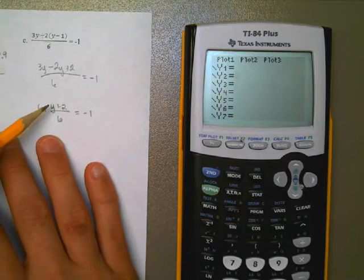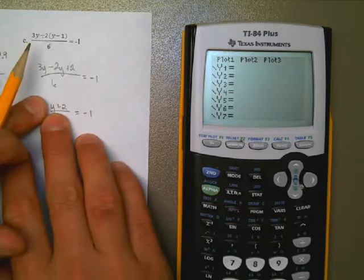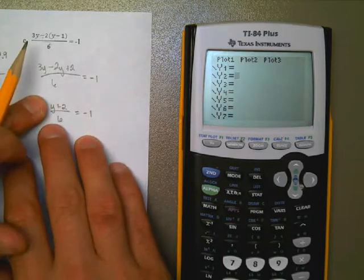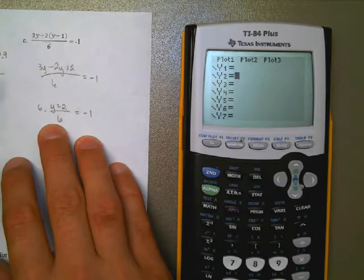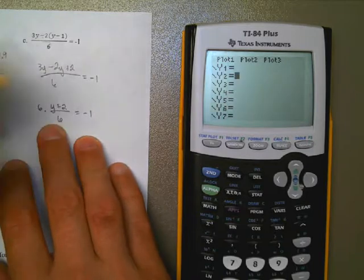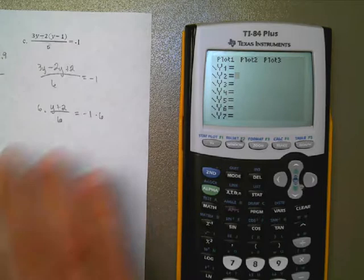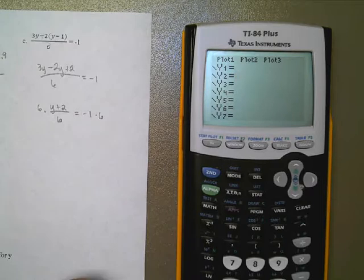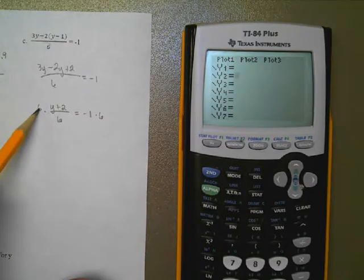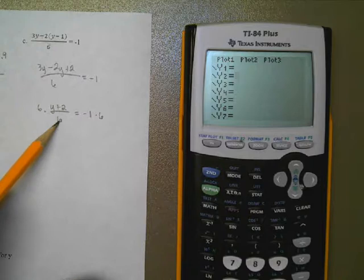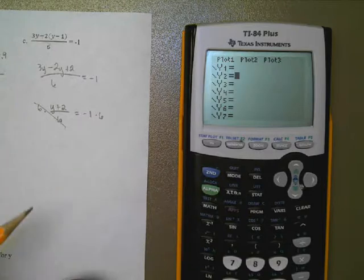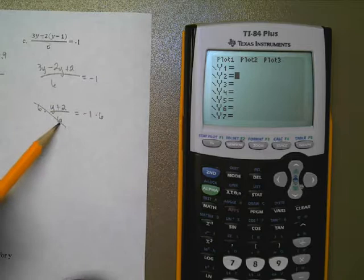Right now you can see I'm taking this y plus 2 chunk of information, I'm dividing by 6. The opposite of division is multiplication, so that's what I need to do. But of course I can't just do it to one side, I've got to do it to both to be fair. So I'm going to multiply both sides. Now I have 6 times this stuff divided by 6. So these two cancel each other out. Multiply by 6, divide by 6, goes away.